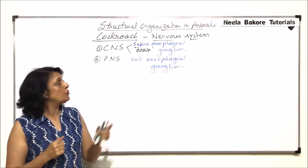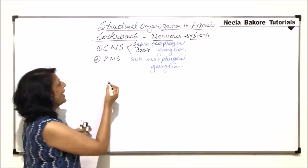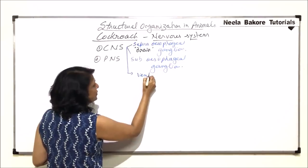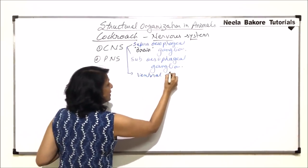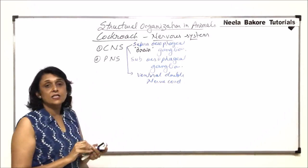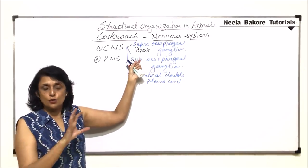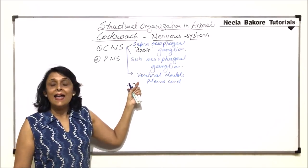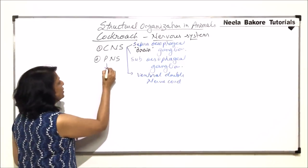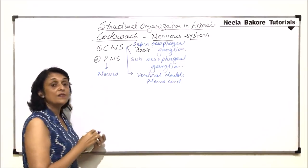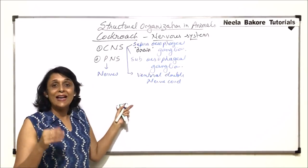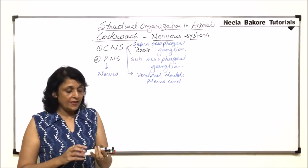To compare with our spinal cord, cockroaches have a ventral double nerve cord in their central nervous system. So there is a structure comparable to the brain, and a ventral nerve cord. The peripheral nervous system includes the nerves that arise from the supraesophageal, subesophageal, and all the ganglia present in this nerve cord.